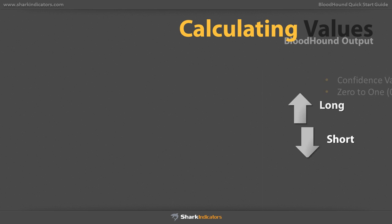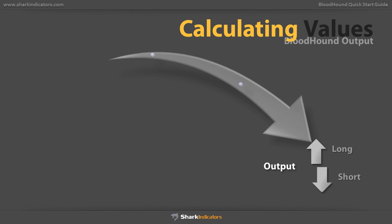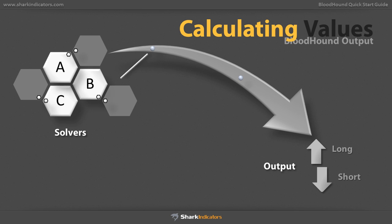Let's see how these values are generated. Bloodhound arrives at these output values using a two-step process. First, you pick a set of solvers. These solvers evaluate things like the slope of an indicator, the length of a bar, the distance of the current price to some support and resistance level, or as we saw in the previous example, a crossover event.